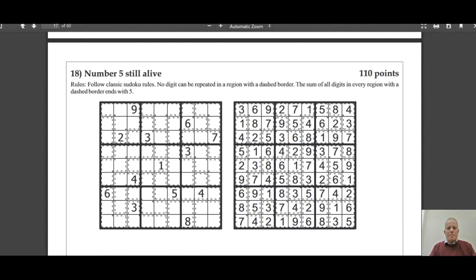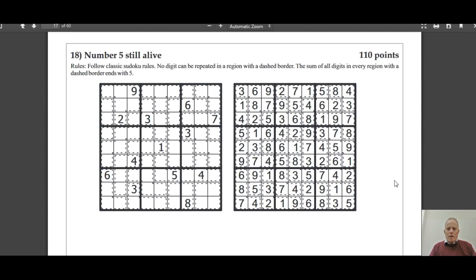The point about, and I think this is the last one in the set - Number Five Still Alive. The sum of all digits in every region ends with a five. So every time there's a cage, the cells in that cage add up to either 5, 15, 25, 35, or 45. Can't be higher than that because no digit can be repeated in a cage.